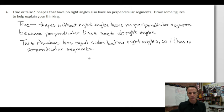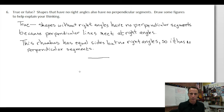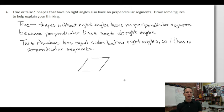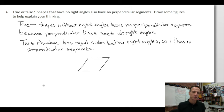Now I'm going to attempt to draw a halfway decent rhombus. You can go straight across, then skip down and draw a line of approximately equal length that is parallel to that one but offset some. If I did that successfully, I should be able to connect the ends of these two segments and end up with a fine-looking rhombus. Not bad — this rhombus has equal sides but no right angles, so it has no perpendicular segments.